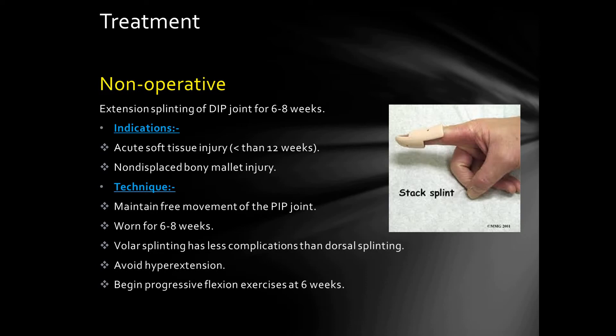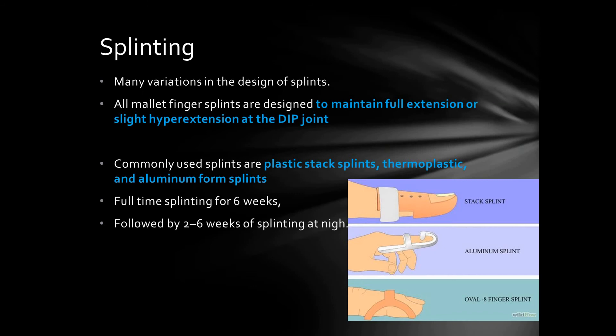Mallet finger is initially treated with a distal interphalangeal joint splint or mallet splint kept for six to eight weeks. Splinting is indicated for acute soft tissue injury less than 12 weeks old and non-displaced bony mallet injury. The basic principle is to splint the distal interphalangeal joint while maintaining free movement of the proximal interphalangeal joint. Volar splinting has fewer complications than dorsal splinting.